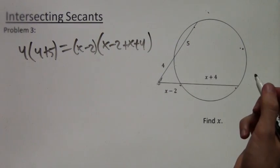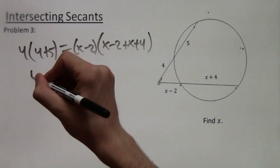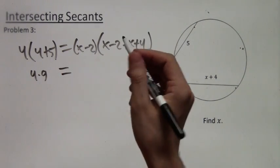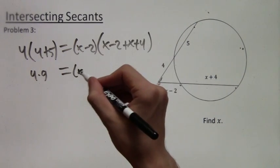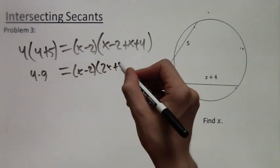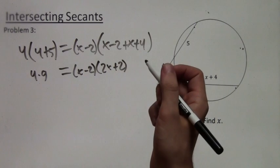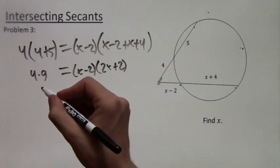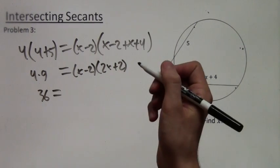We just applied the theorem another time. Now we have to write this all out. This is 4 times 9 equals x minus 2 times, and that's 2x plus 2. And 4 times 9 is 36.